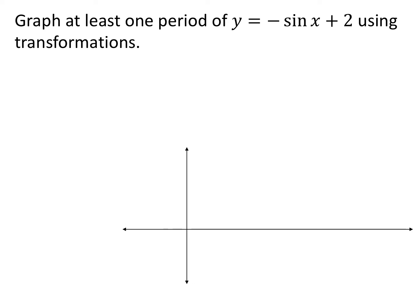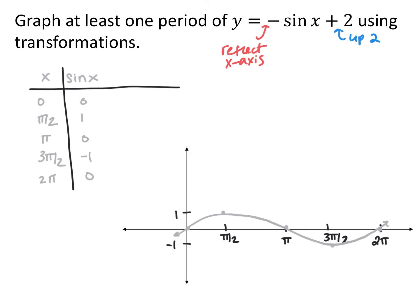If we look at the function y equals negative sine of x plus 2, we can graph this using the parent function of sine of x and our transformations. The negative in front is going to reflect us across the x-axis, and then the plus 2 on the end is going to shift us up 2. This is the parent function of sine of x, and then you reflect it across the x-axis and shift it up 2. If you prefer a table, here is our parent function table, and then we can apply those transformations from there.